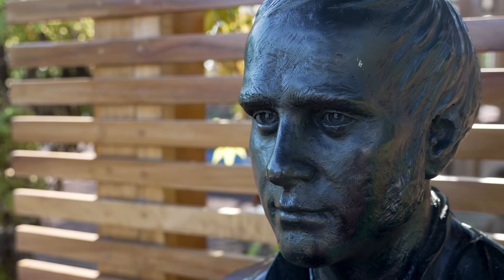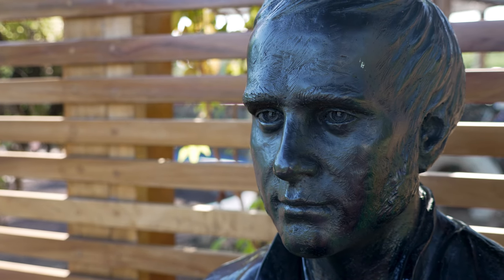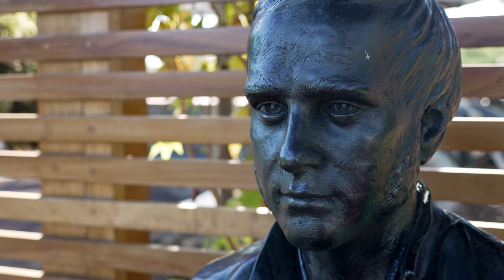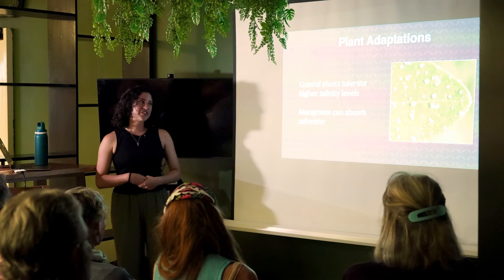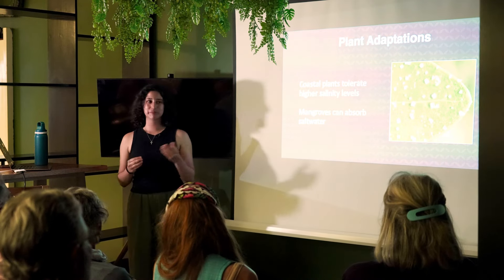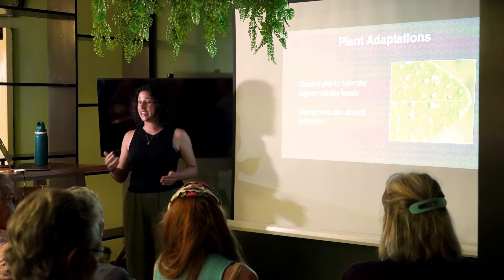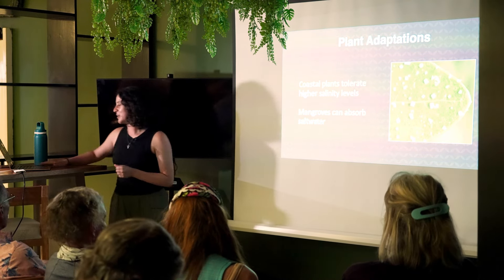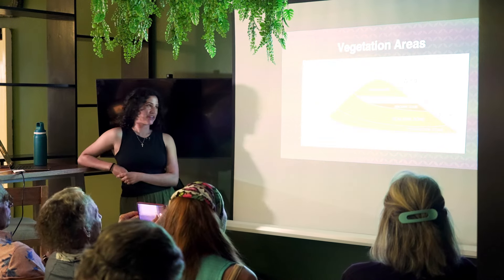Darwin himself, when he came to the Galapagos, was very unimpressed with the plants and called them 'wretched little things.' It's funny because these plants have so many cool adaptations and are very unique — but Darwin didn't like them. Now let's get into the vegetation zones.